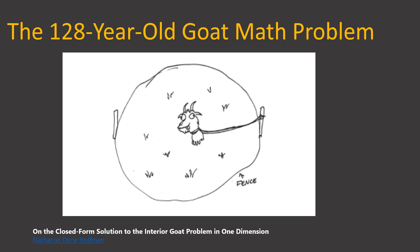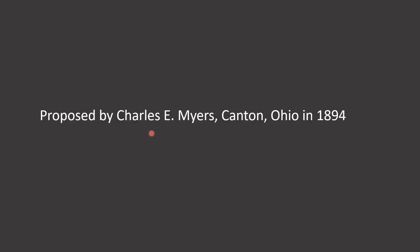This is a very interesting problem - the 128-year-old goat problem. As you can see here, we have a goat tethered to the edge of a circular field, the fence. It was proposed by Charles E. Myers from Canton, Ohio in 1894. From that time all the way to 2020, there was no closed form solution for this problem. The problem is finding the length of the tether that would allow the goat to graze half of the field.